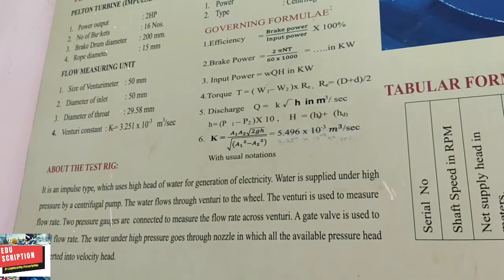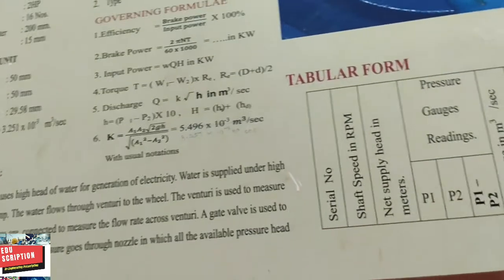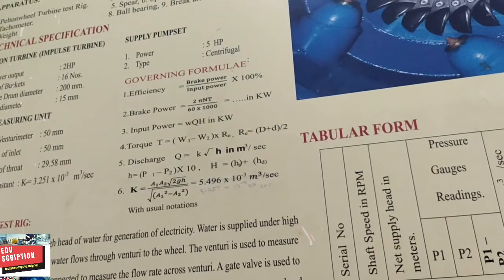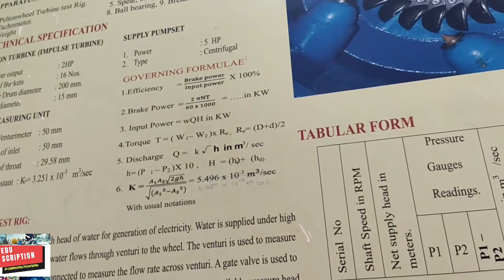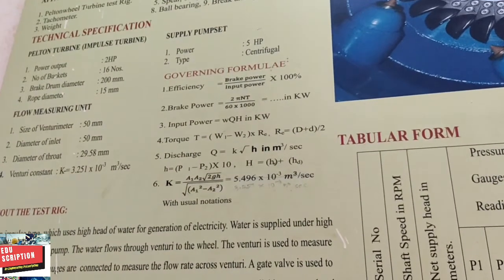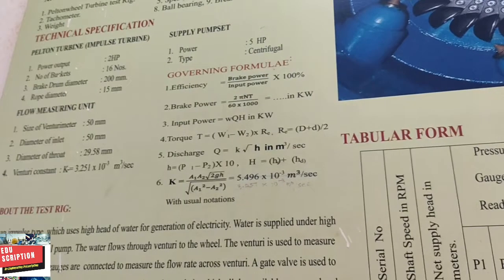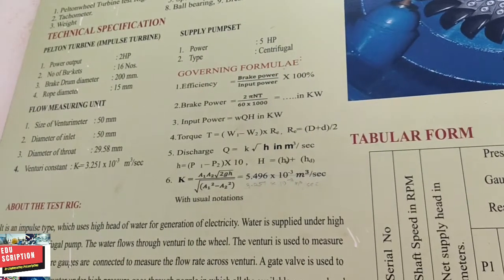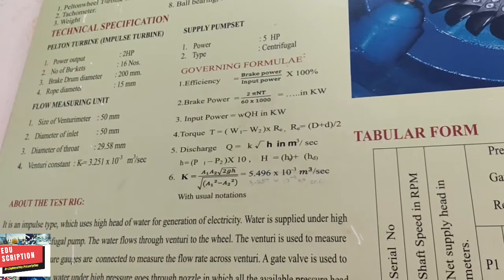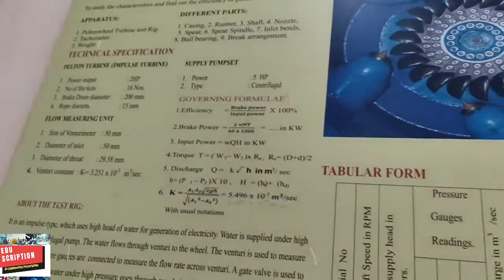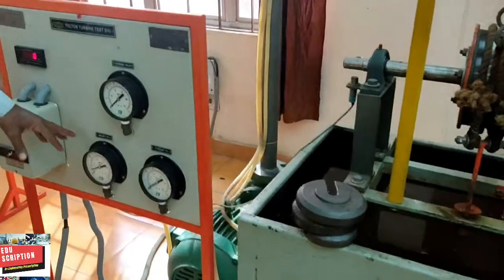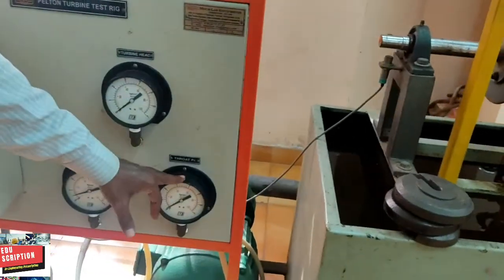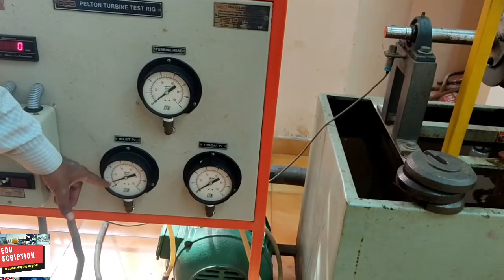h is the... initially when we take the reading, we find out the pressure P₁ and P₂. P₁ is the inlet pressure when water flows through the venturi meter at the converging part, so we find out the inlet pressure and find out the throat pressure. That is in the front panel. From that front panel we find out P₁ and P₂. This is your P₁ and this is your P₂. This indicates the converging pressure and this is throat pressure.